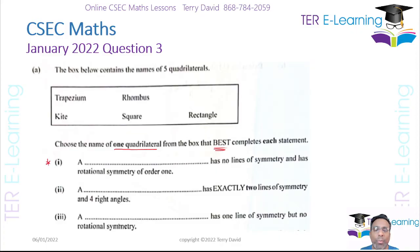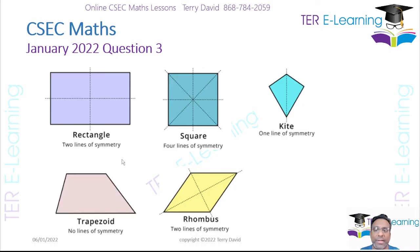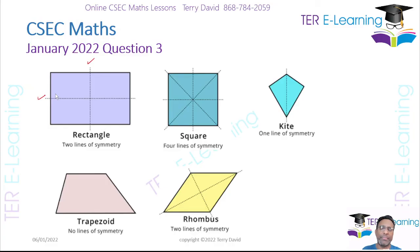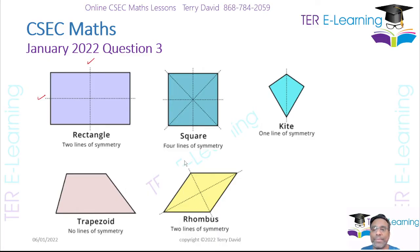You all need to understand what rotational symmetry and lines of symmetry are. Looking at the five shapes: the rectangle has two lines of symmetry. When you fold the shape along those lines it lines up exactly. A square has four lines of symmetry, the kite only has one, the trapezium has no line of symmetry, and the rhombus has two.